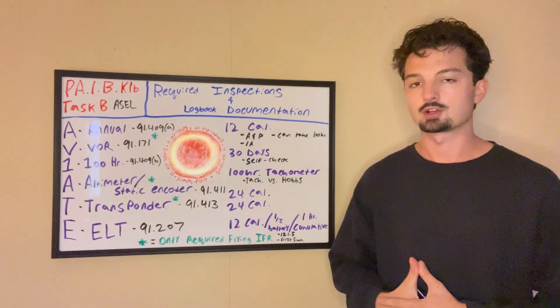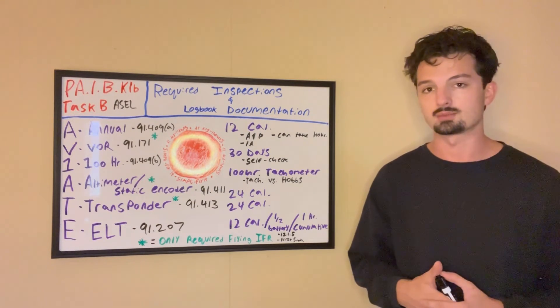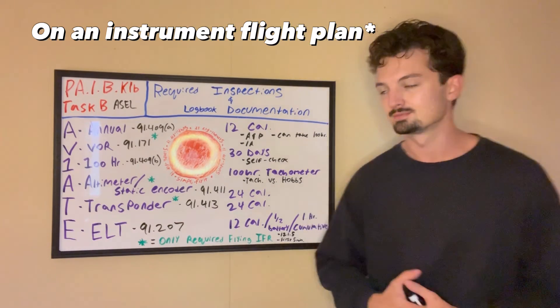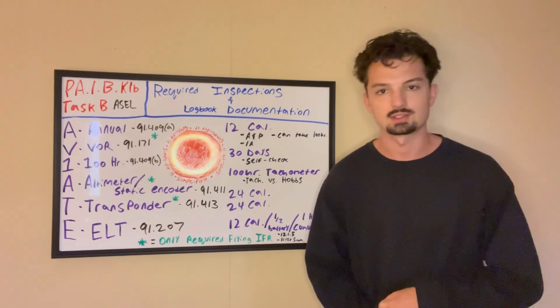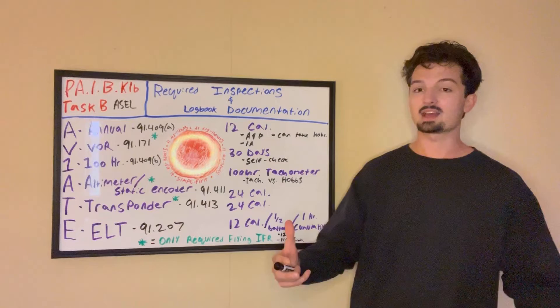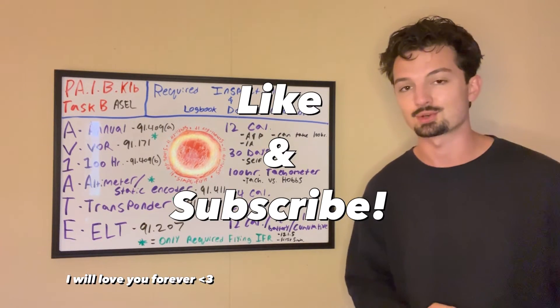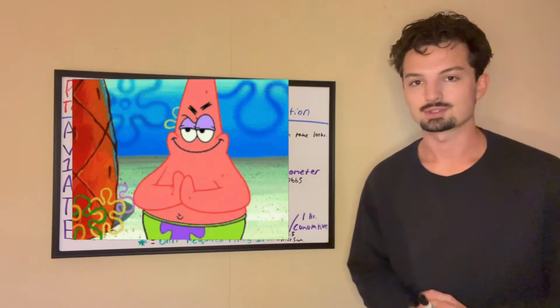Next one is T for our transponder. This also needs to be inspected every 24 calendar months and also is only needed if we're flying in instrument flight rules. Now this video is not here to tell you what the altimeter and transponder slash static encoder system are. Eventually we'll be getting into that as we go through the ACS. So if you're interested in learning about those things, like and subscribe to the channel as it helps us grow and so you don't miss out on those videos.